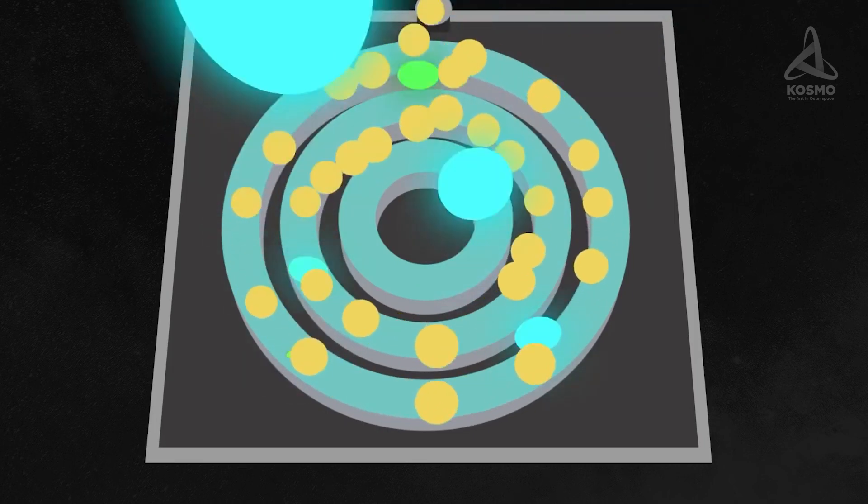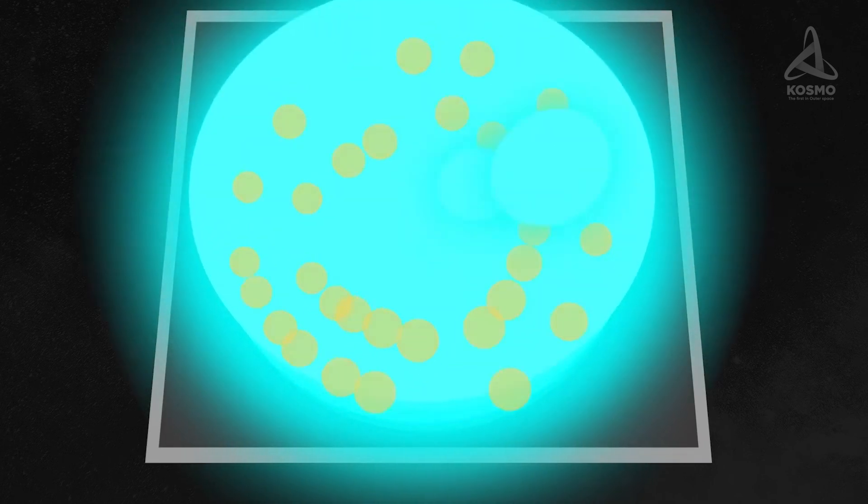The general principle of its work lies in ionizing gas and accelerating it with electrostatic field. Since ions have a mass, they can be accelerated, which will produce the thrust.